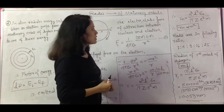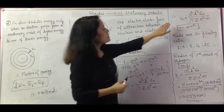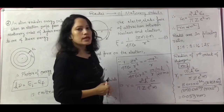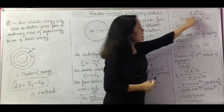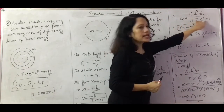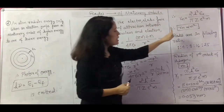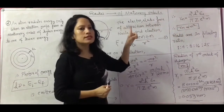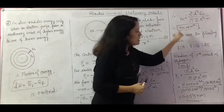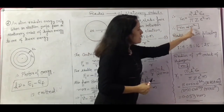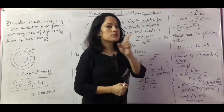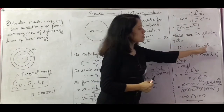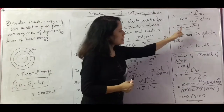From this relation, if n takes values in the ratio 1:2:3:4:5, then R would vary in the ratio 1:4:9:16:25, because R is directly proportional to n². Now let us calculate the radius of the first orbit of the hydrogen atom. Hydrogen is the simplest atom having only one electron, so n = 1 and Z = 1. Putting these values in the formula, we get R₁, and for subsequent orbits: R₂ = 2² × R₁ = 4R₁, R₃ = 3² × R₁ = 9R₁, and so on.